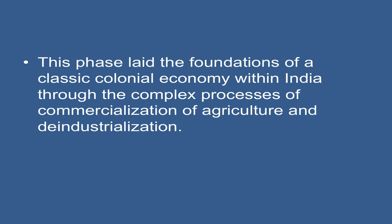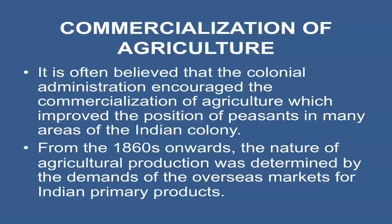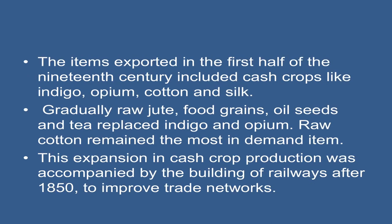It is often believed that the colonial administration encouraged the commercialization of agriculture, which improved the position of peasants in many areas. From the 1860s onwards, the nature of agricultural production was determined by the demands of the overseas market for Indian primary products. Items exported in the first half of the 19th century included cash crops like indigo, opium, cotton, and silk. Gradually, raw jute, food grains, oilseeds, and tea replaced indigo and opium. Raw cotton remained the most in-demand item. The expansion of cash crops production was accompanied by the building of railways after 1850 to improve trade networks.